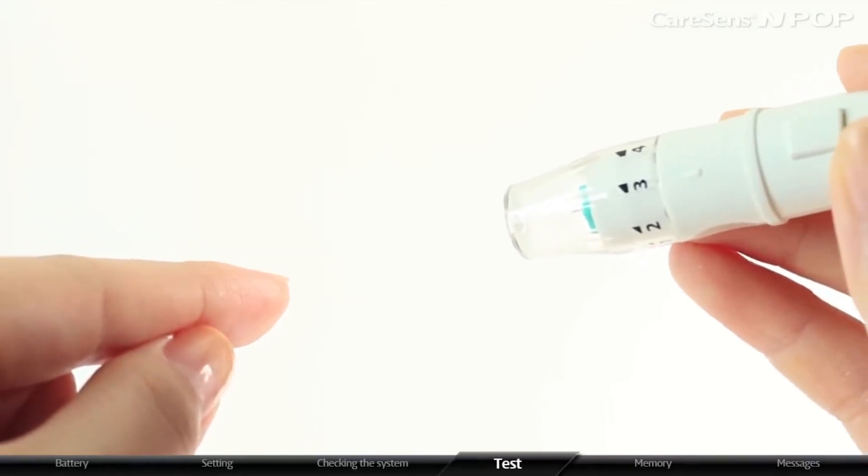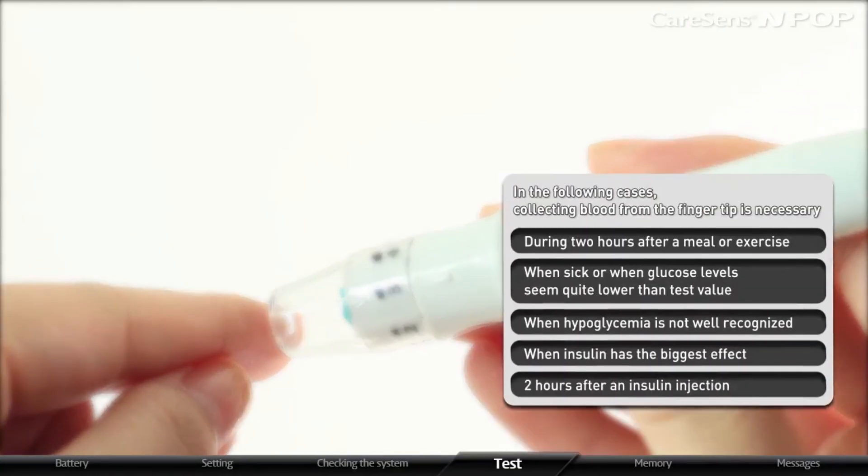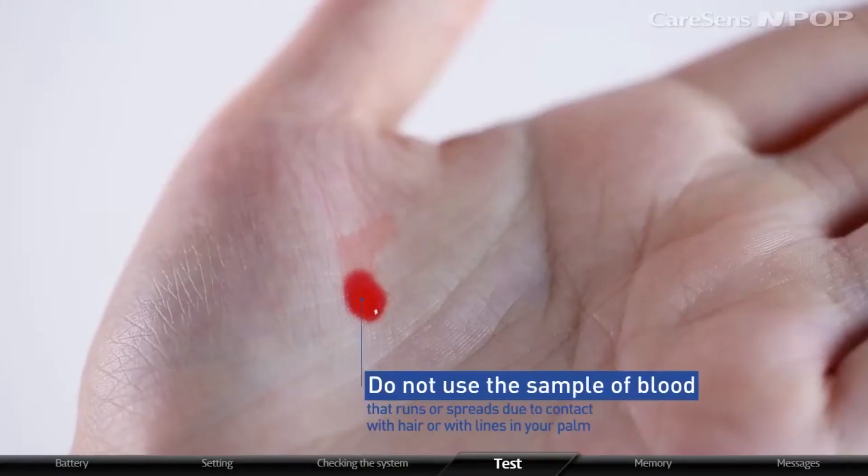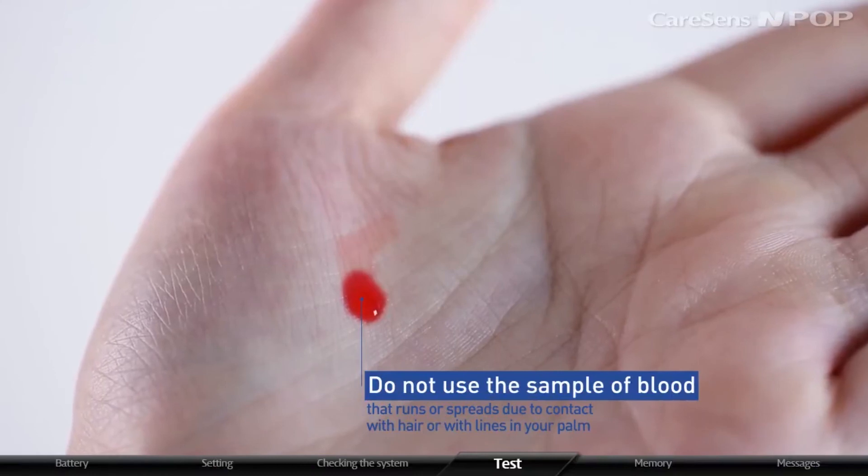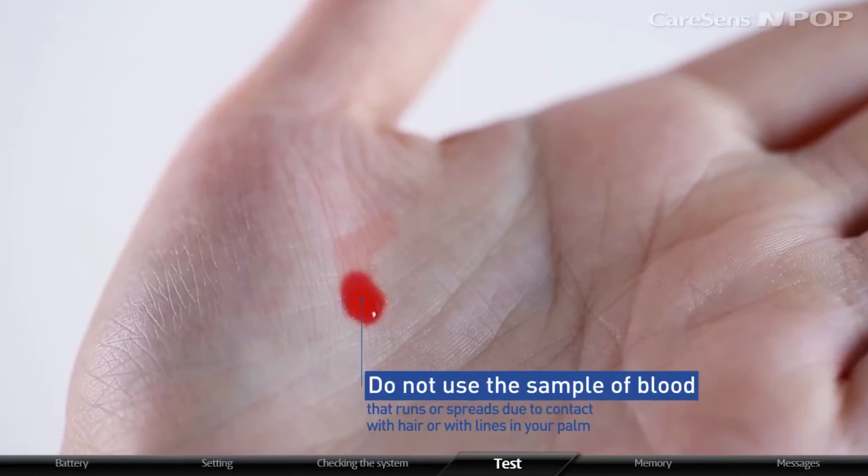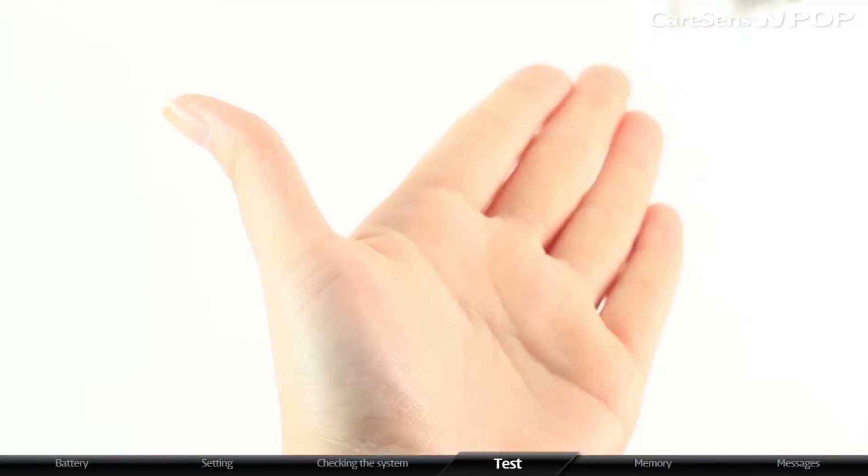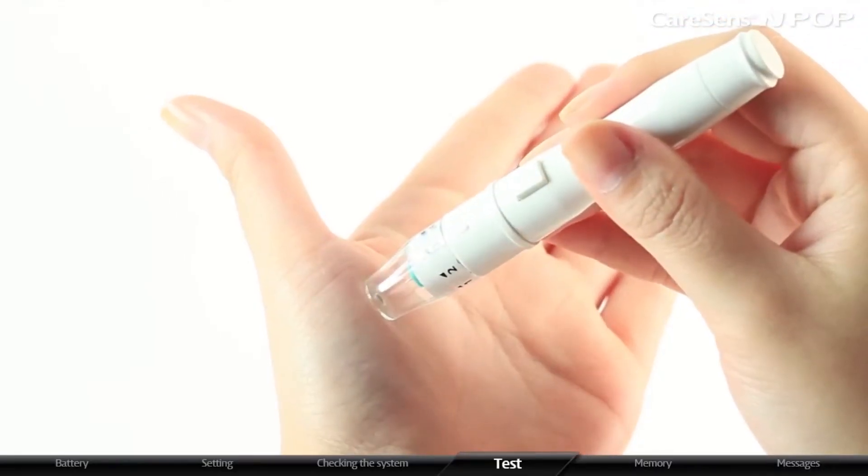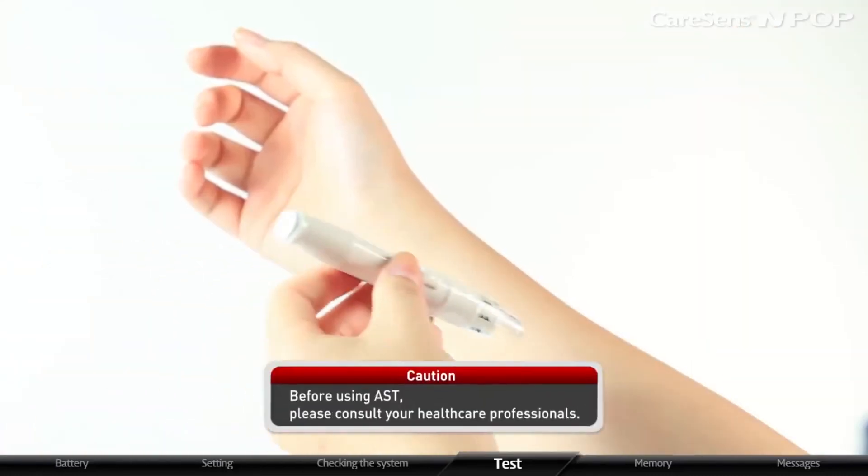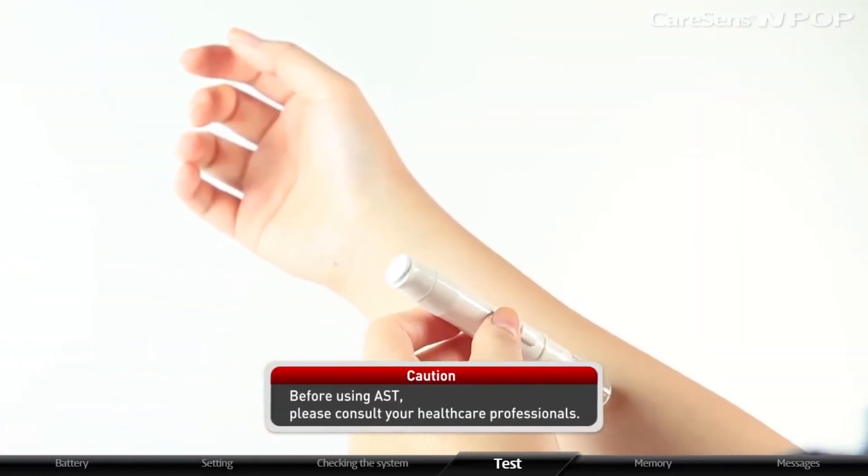In the following cases, collecting blood from the fingertip is necessary since blood collected from alternative sites may vary. If the sample drop of blood runs or spreads due to contact with hair or with lines in your palm, do not use that sample. Try puncturing again in a smoother area. Before using AST, please consult your healthcare professionals.